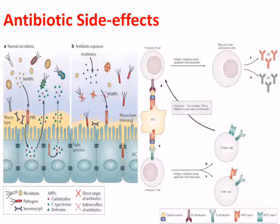Why would gastrointestinal disturbances be so common with antibiotics? The diagram shows a normal bacterial cell population resident in the gut, with epithelial cells secreting a layer of mucus that protects us from pathogen invasion. Our microbiota also prevent invasion by pathogenic bacteria. When antibiotics are taken — particularly oral antibiotics — they kill these normal and healthy microbiota, giving a selective advantage to pathogenic bacteria, meaning they can overgrow in that region of the gut, which can be dangerous. Therefore, it's not unusual for people to experience gastrointestinal side effects during a course of oral antibiotics.